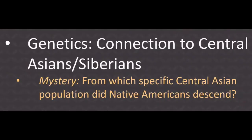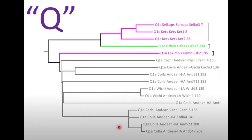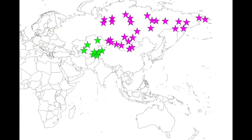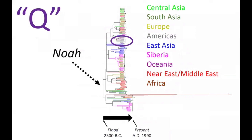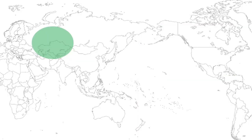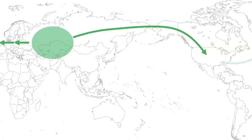We have tested Native Americans and found they all contain the haplogroup Q. This Q only shows up in two people groups in Asia. So now we have the best evidence of all — biological evidence. This tells us the story of how migration happened, and we can see it in two events: the first was pushed east over the Bering Strait, and the later migration went west and settled in Florida.